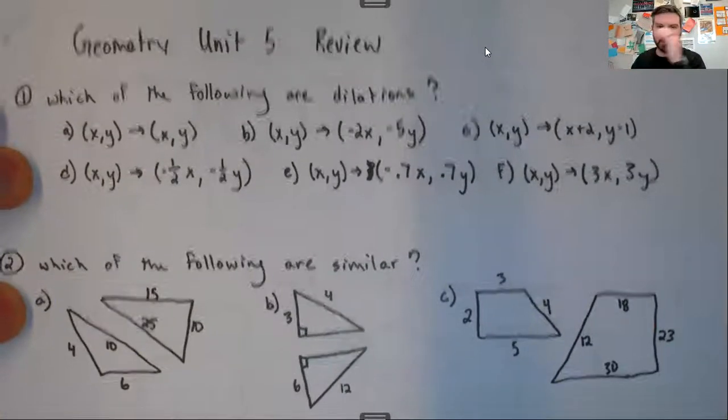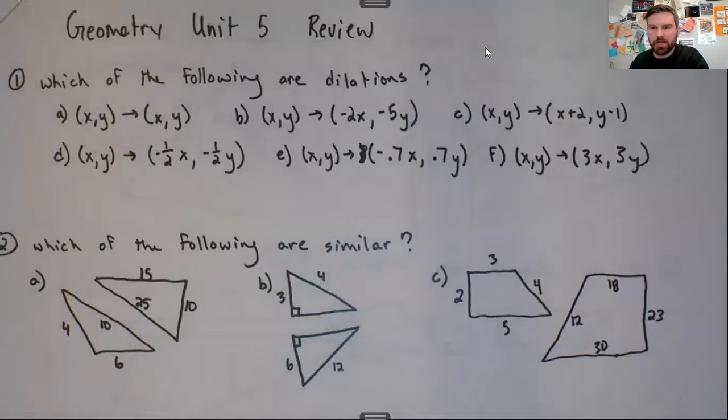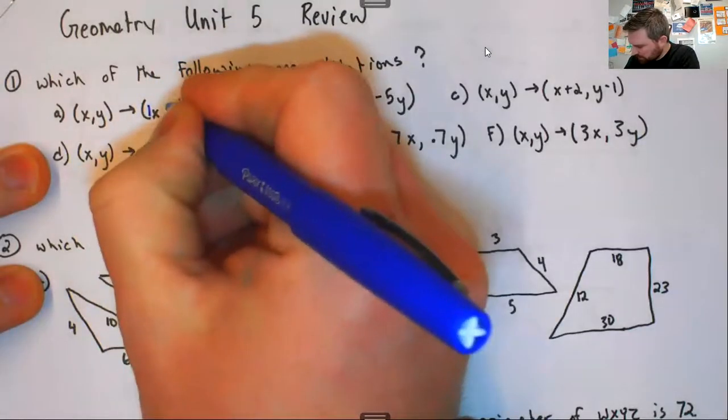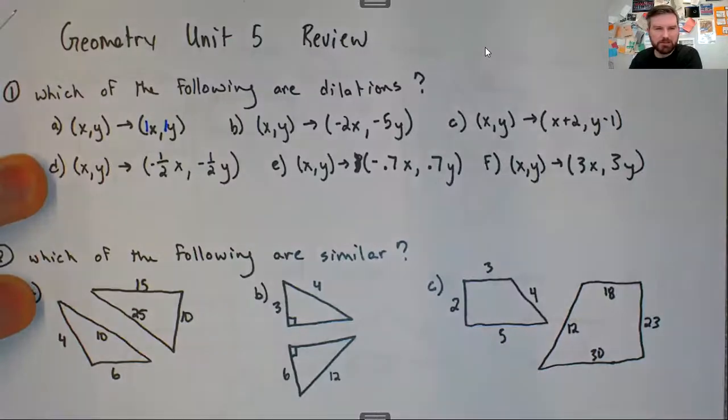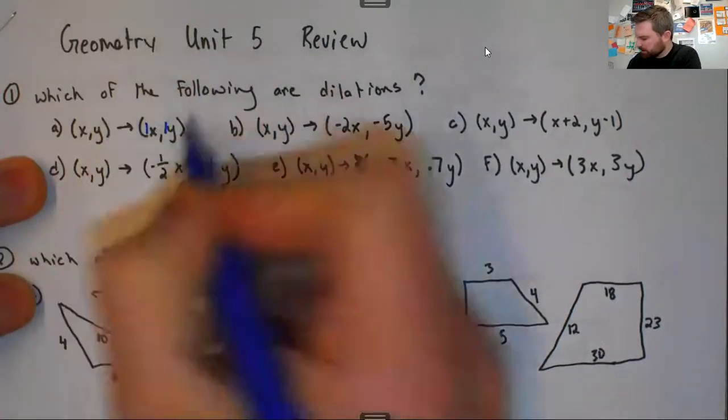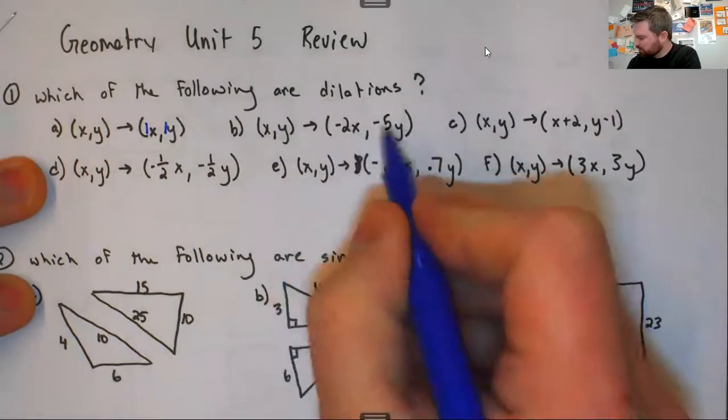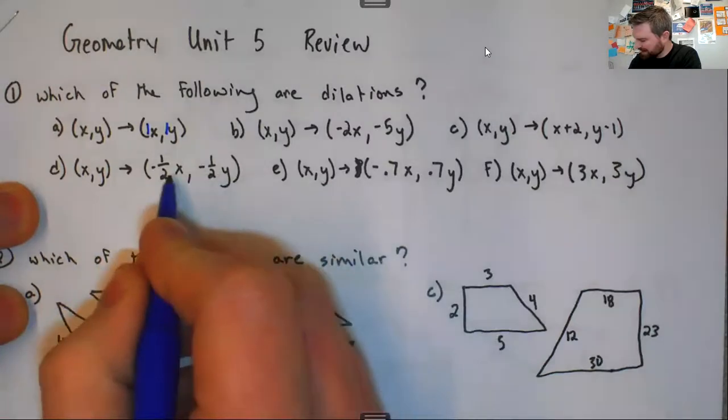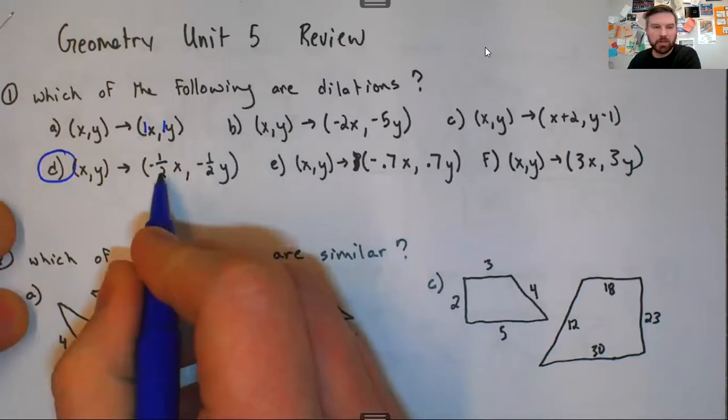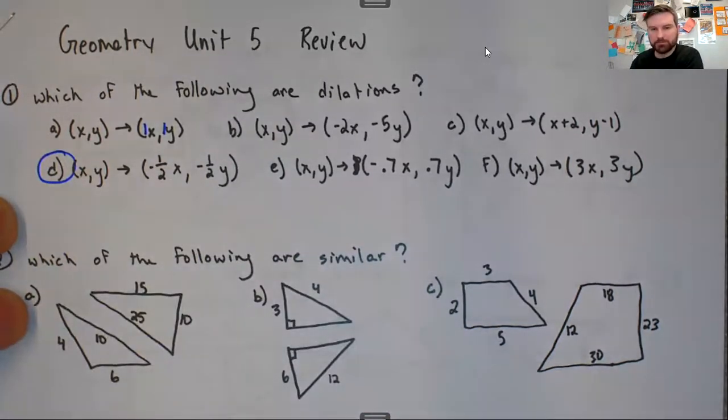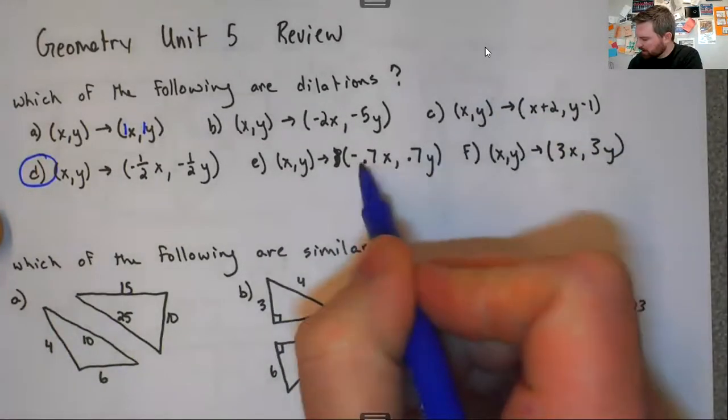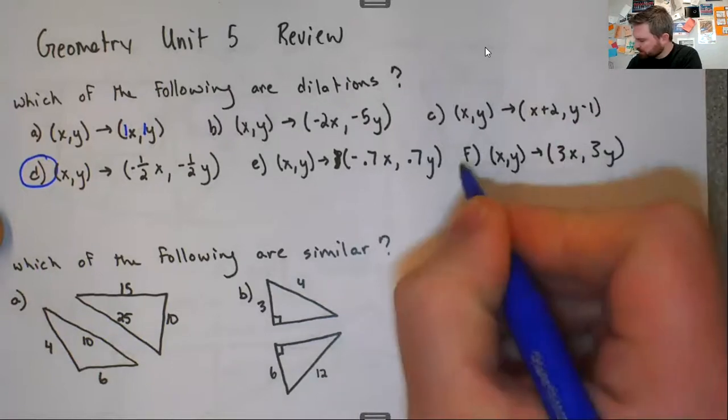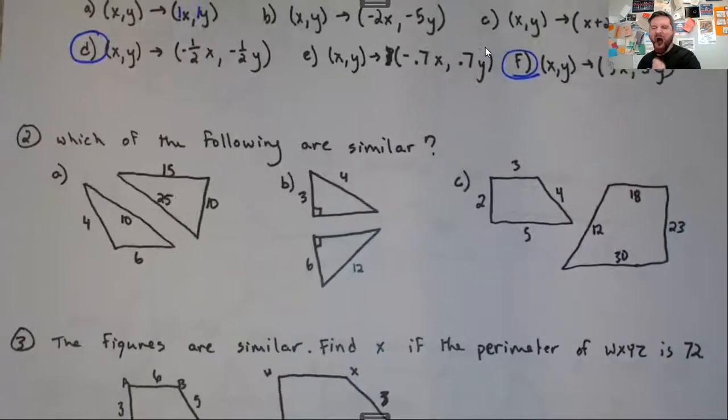Question one says, which of the following are dilations? Remember, these are rules, and with the rule of dilation, you are multiplying both the X and Y by the same number. In this one, you are multiplying by one, so that's not changing the size at all. Here, you're multiplying by two different numbers, so that's not one. Here, you're adding and subtracting, so that would just be a translation. Here, you're multiplying both by negative a half, so that's a dilation. Here, you're multiplying by a negative and a positive, so that's not one. Here, you're multiplying by three, so that's one.